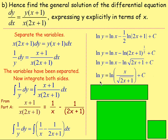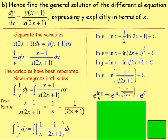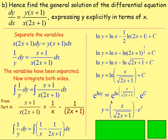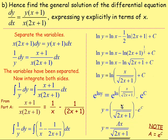If you want to get y on its own, undo ln using exponentials. So let's take the exponential of both sides: e to the power of ln y equals e to the power of ln(x over sqrt(2x plus 1)) plus c. Because you've got e to the power of something plus something, break that up: e to the power of ln(fraction) times e to the power of c. ln and e cancel, leaving y equals x over the square root of (2x plus 1) times e to the power of c. e to the power of c is just a. Therefore, y equals a times x over the square root of (2x plus 1). And that is your answer.